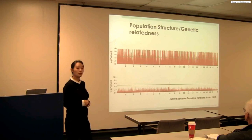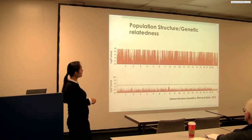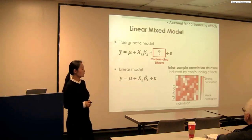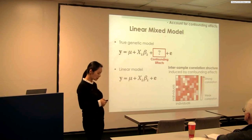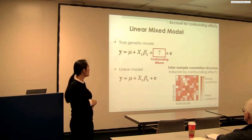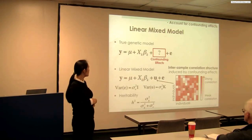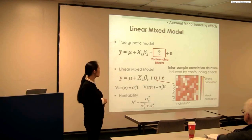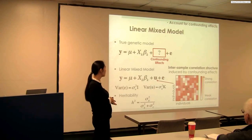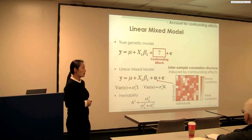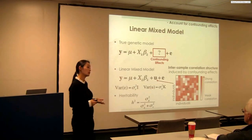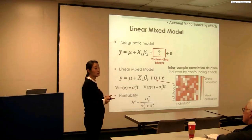This graph from Nature Review 2012 shows how serious problems population structure can cause in GWAS — showing Manhattan plots before and after accounting for population structure. The true genetic model contains some form of confounding effects that create correlation between individuals, which is not modeled in the testing linear model. In the linear mixed model, an extra term U incorporates this inter-sample correlation structure, absorbing the confounding effect so you can test the association between the SNP and phenotype independent of it. The term heritability measures how much variation in phenotypes is due to genetic variation, giving an idea of how much phenotypes are affected by population structure.